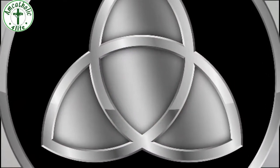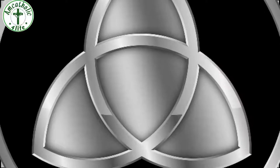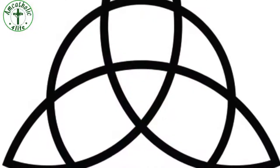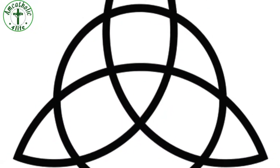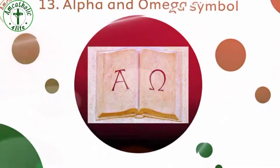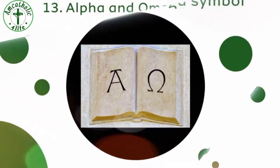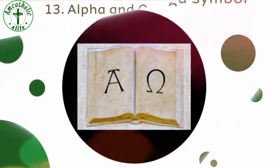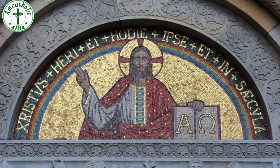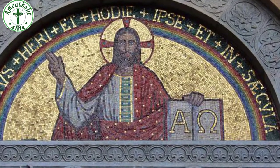The triquetra represents the Holy Trinity: God the Father, God the Son, and God the Holy Spirit. It is sometimes shown with an interlocking circle.